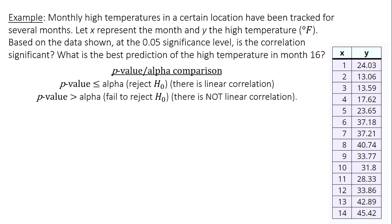Monthly high temperatures in a certain location have been tracked for several months. Let x represent the month and y the high temperature in degrees Fahrenheit. Based on the data shown at the 0.05 significance level, is the correlation significant? What is the best prediction of the high temperature in month 16?